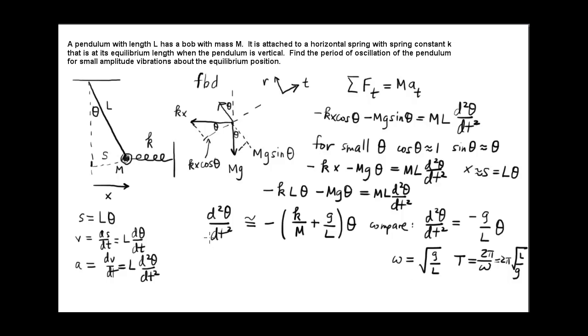We can solve this problem by analogy now. Because the only difference in the differential equation is instead of just g over l, we've got g over l plus k over m. So the appropriate way of getting the omega is to see that omega is now the square root of k over m plus g over l.